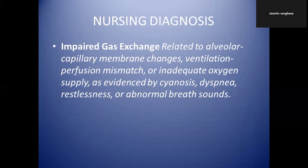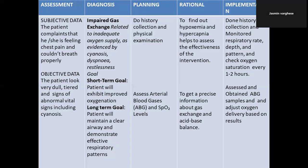The nursing diagnosis can be formulated as: 'Impaired gas exchange related to alveolar-capillary membrane changes, or ventilation-perfusion mismatch, or inadequate oxygen supply, as evidenced by cyanosis, dyspnea, restlessness, or abnormal breath sounds.' Keep in mind that one patient won't show all these conditions — you formulate the diagnosis based on your specific patient's presentation.